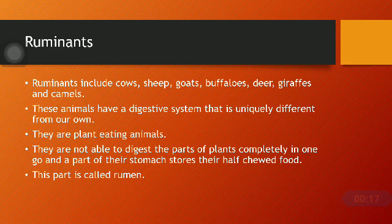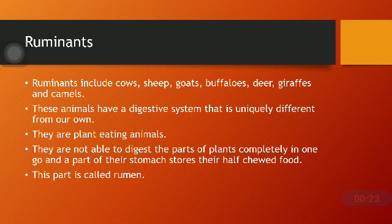Ruminants include cows, sheep, goats, buffaloes, deer, giraffes, and camels. These animals have a digestive system that is uniquely different from our own digestive system. They are herbivores — plant-eating animals.